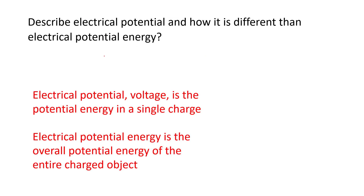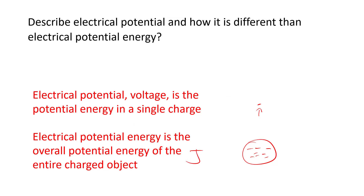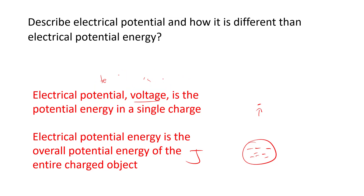How is electric potential different from electric potential energy? Electric potential (or voltage) is the potential energy per single charge, whereas electric potential energy refers to the entire object. There are three ways to say voltage: electric potential, voltage, and potential difference — all meaning the same thing, with units of volts. Electric potential energy, by contrast, is measured in joules. The difference is that voltage is a per-charge quantity.